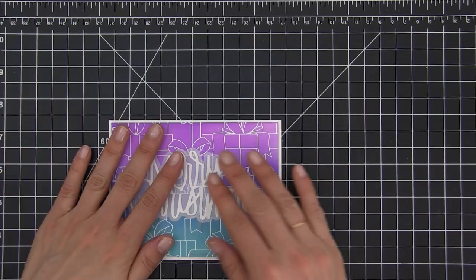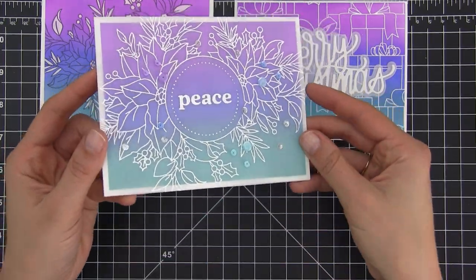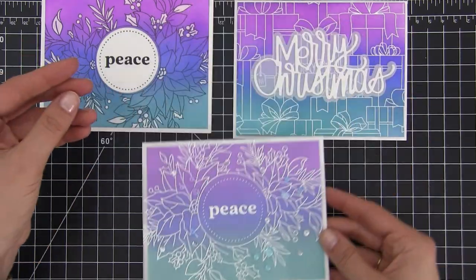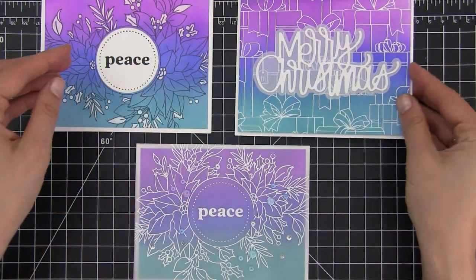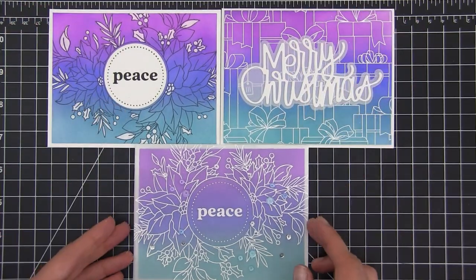So there you have it—I have three cards made in a really quick and easy way. You can see that I added a few sequins on the vellum paper one, but the other two I did not add anything else. I think they look good the way they are.